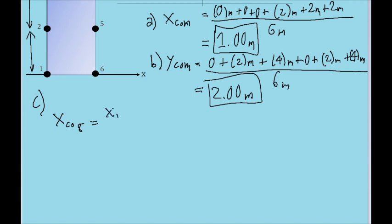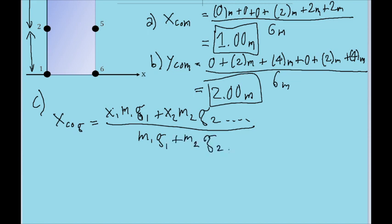x1, m1, g1, plus x2, m2, g2, and so on and so forth, and it's all divided by that same thing but without the x's. So m1, g1, plus m2, g2, and so on and so forth, until we've iterated through all of the particles.